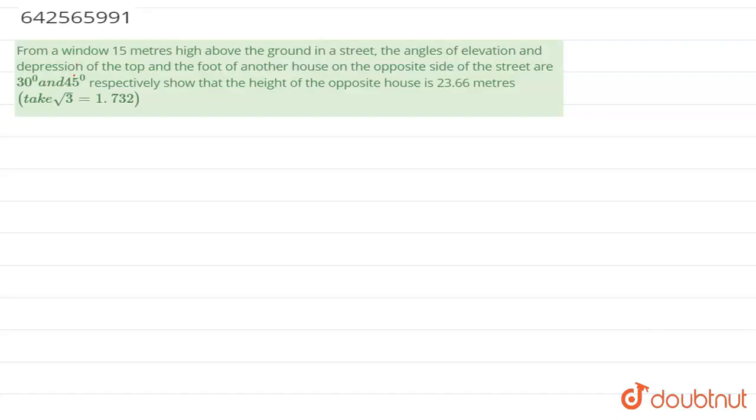Hello, so in this question we are given a window 15 meters high above the ground in a street. So suppose this is a window which is 15 meters high above the ground. The angles of elevation and depression of top and foot of another house opposite to the street are given. So suppose there is another house opposite to street which is this.